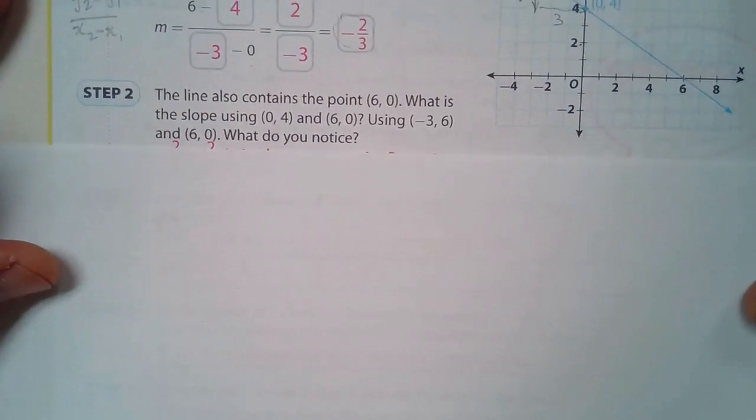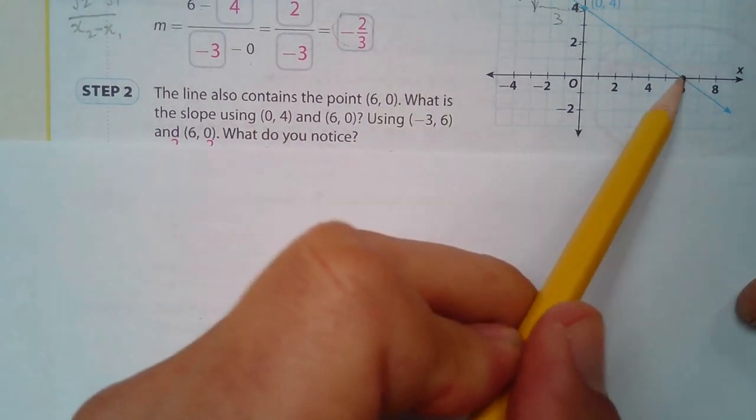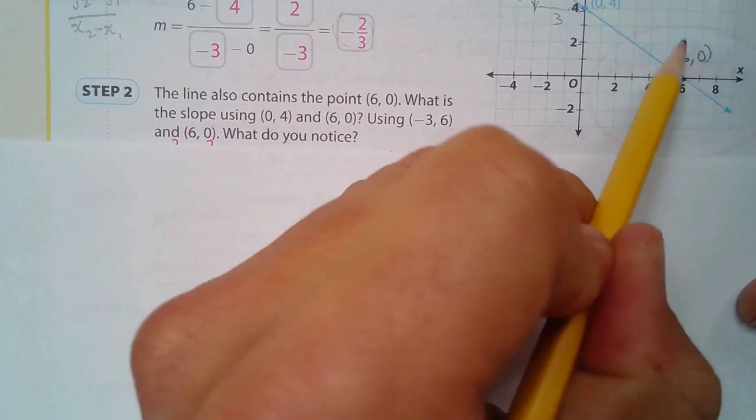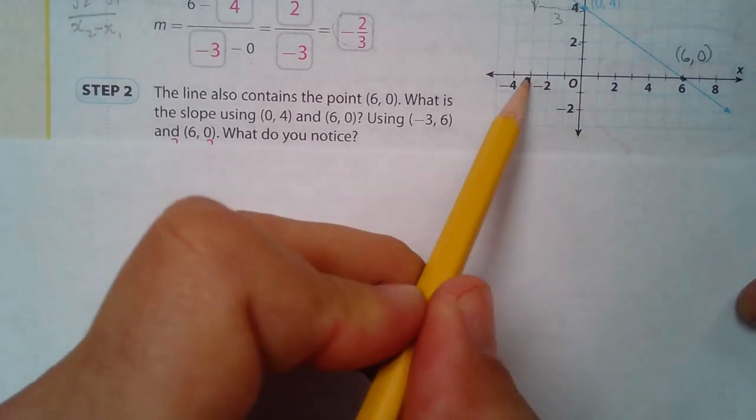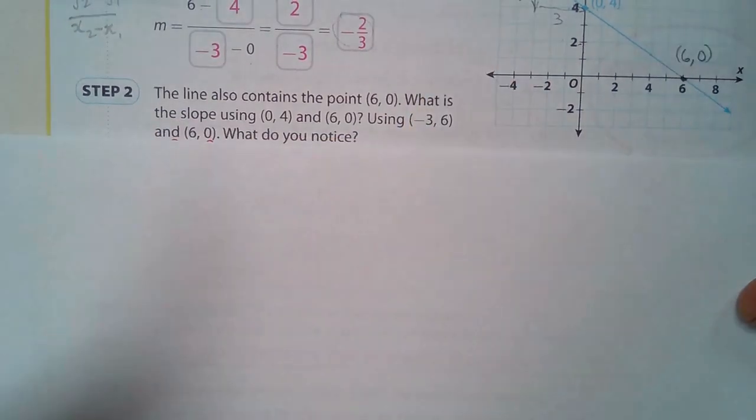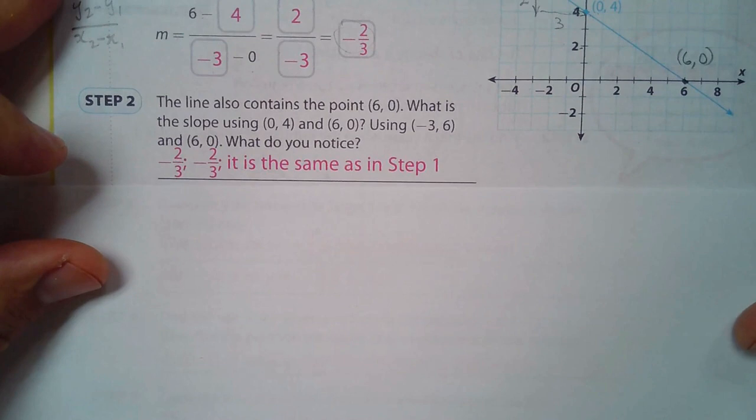The line also contains the point six zero. What is the slope using zero four and six zero? So they're saying that six zero is also one of these points. What do you notice? Well, it's all the same slope.